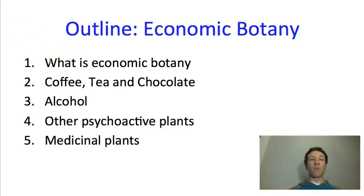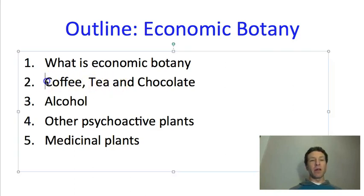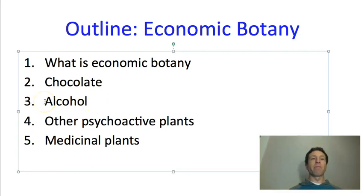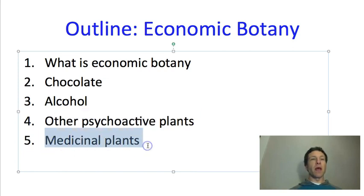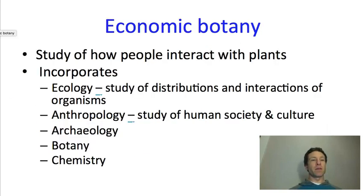We'll start by talking about what is economic botany and ethnobotany — they're closely related fields. We'll then go on and focus mostly on chocolate, mentioning coffee and tea in passing. Then we'll talk about alcohol, which is itself not a plant but is derived from the sugars that come from plants, and how alcohol is made. Then we'll talk a little bit about other psychoactive plants, medicinal plants, and the future of medicinal botany. So that's what's coming up.